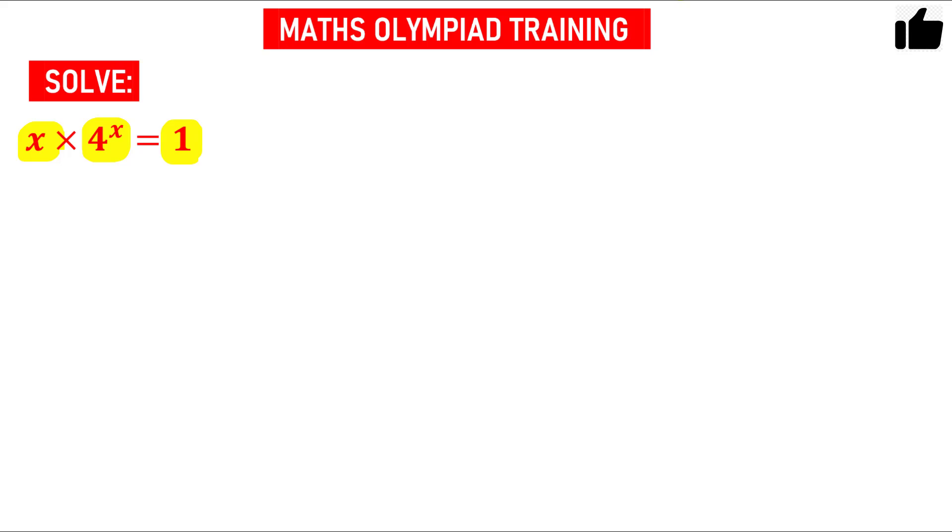So what is the value of x that satisfies this equation? How will you solve this problem? You have one linear function that is x, another exponential function that is 4 raised to the power x, and the product of these two functions equals 1.